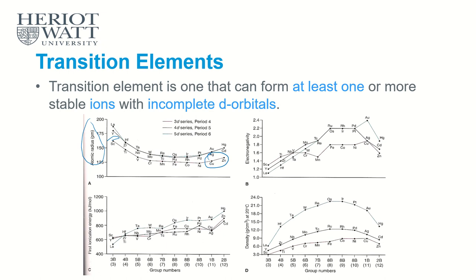Now let's look at electronegativity — the tendency to accept electrons. Moving across a period, the general trend is increasing because core charge is increasing. However, at the end of the transition series, electronegativity decreases. This is again because the d orbitals accumulate more electrons, contributing to a higher shielding effect, which weakens the attraction towards electrons.